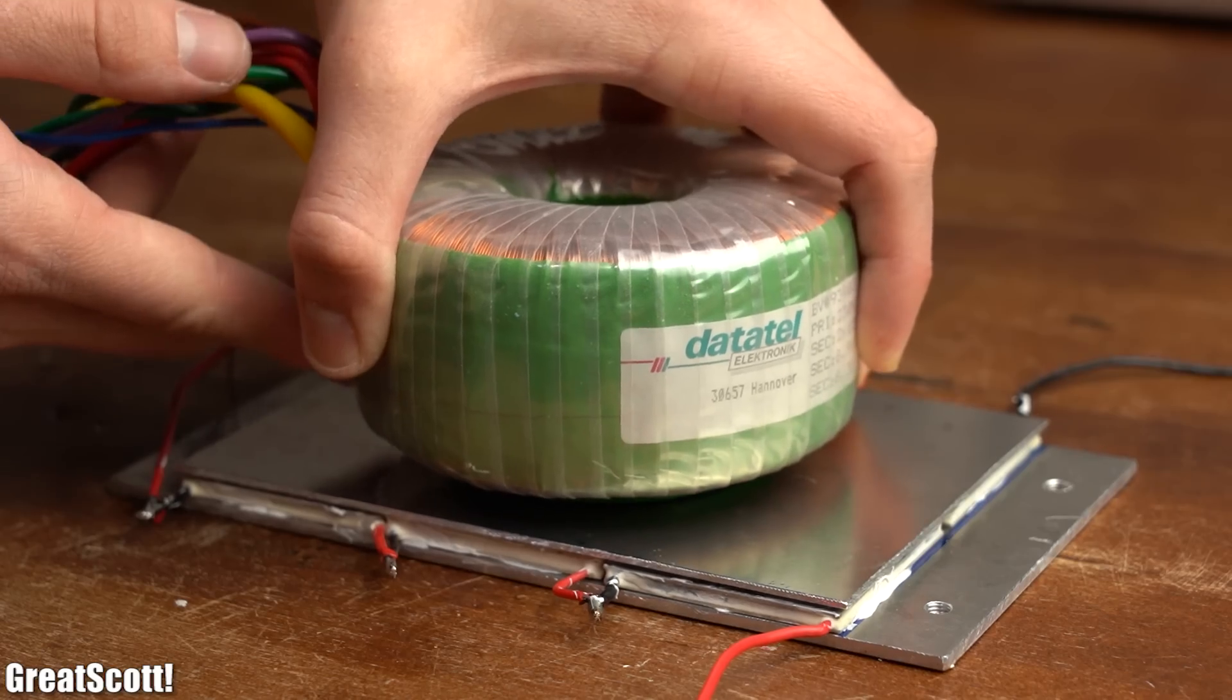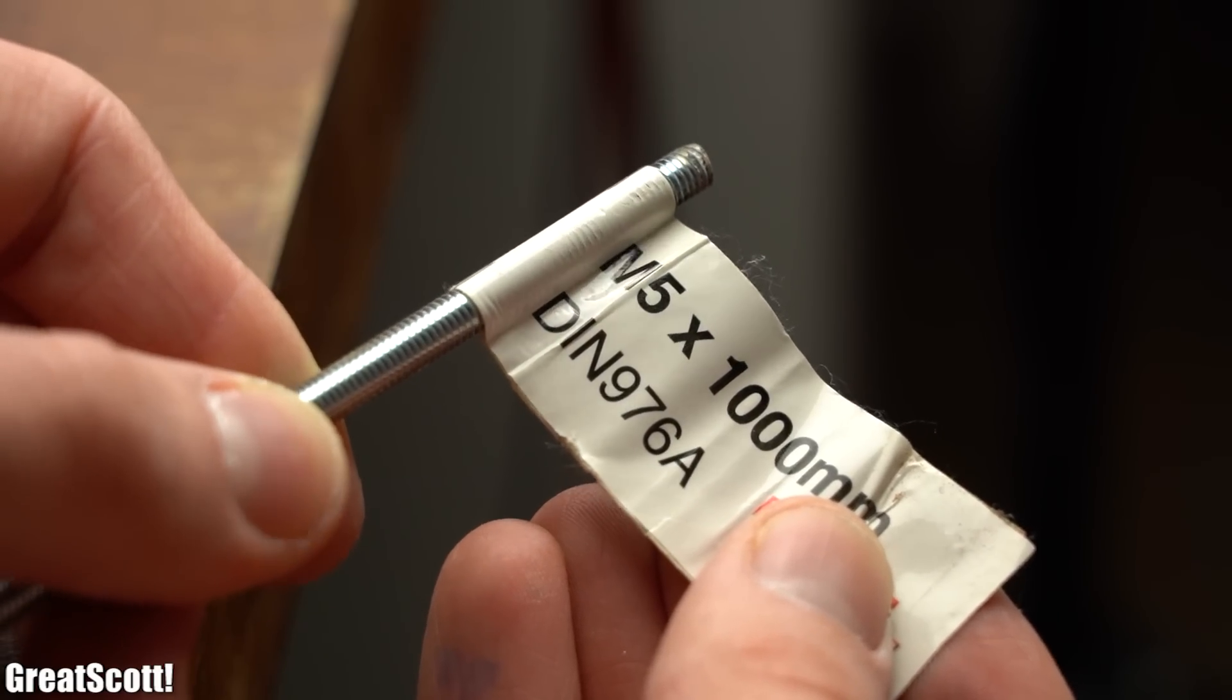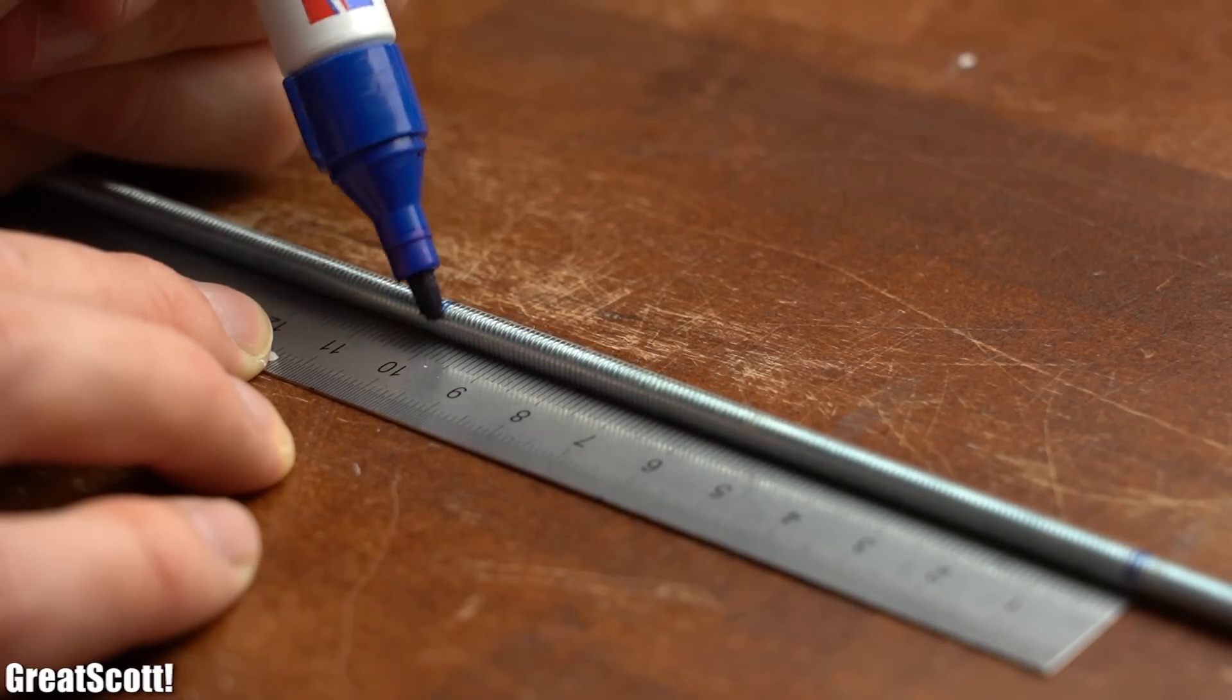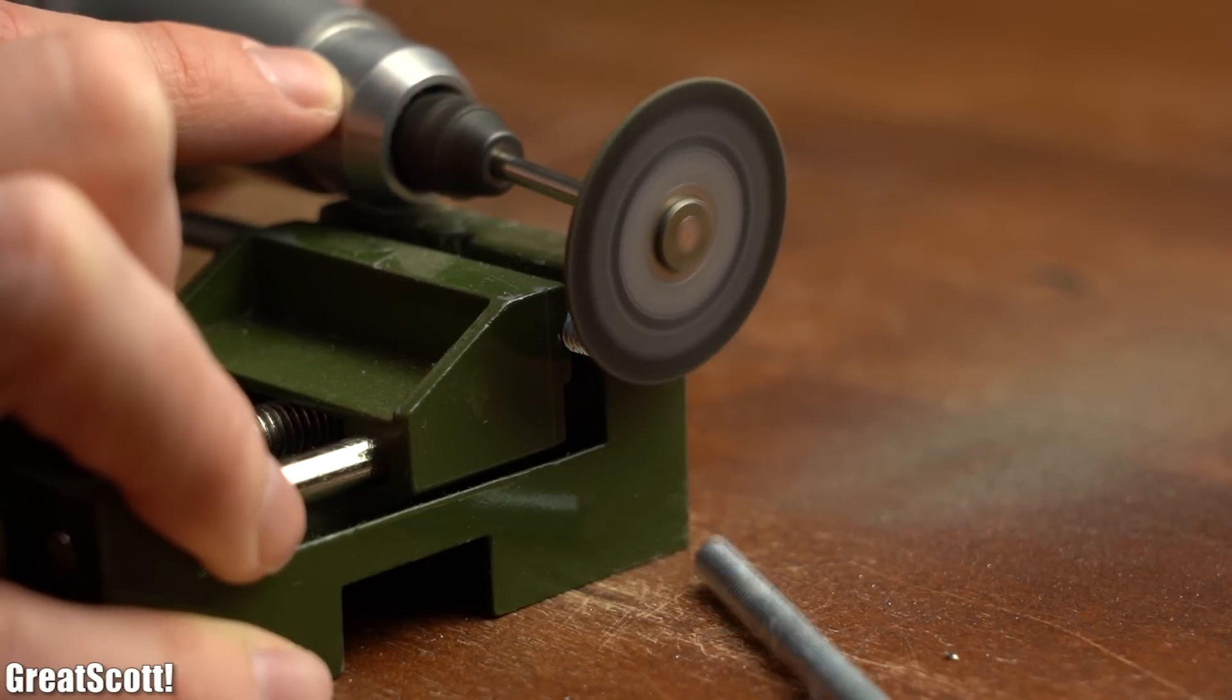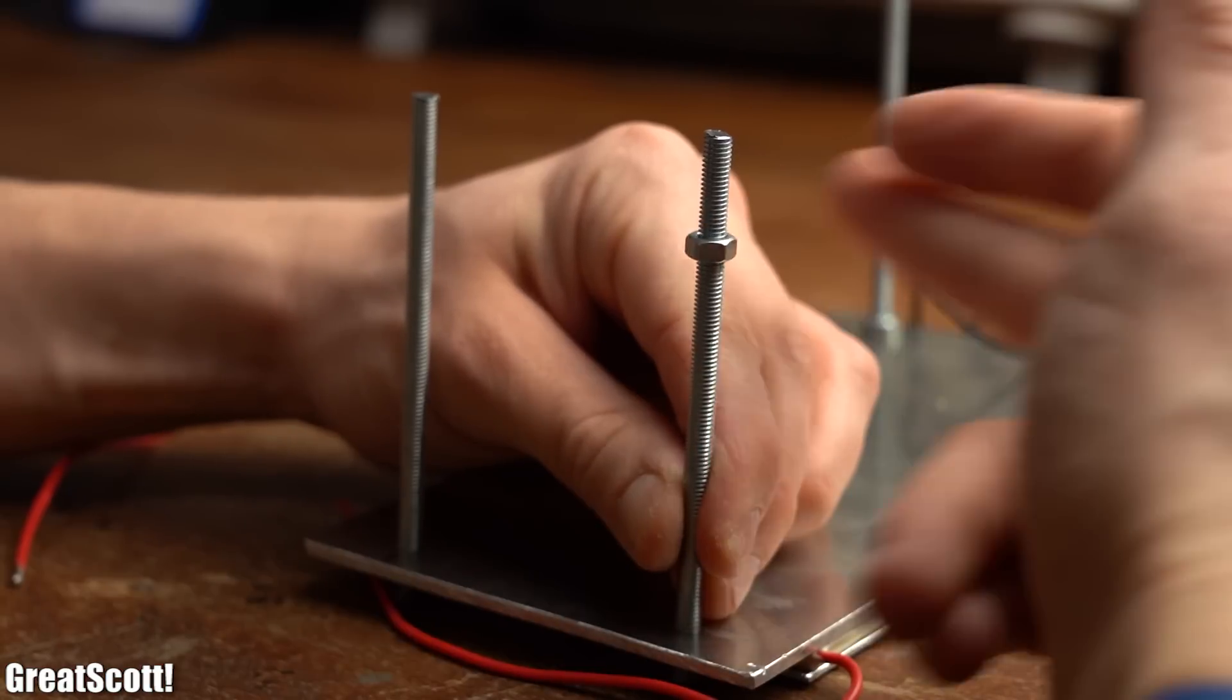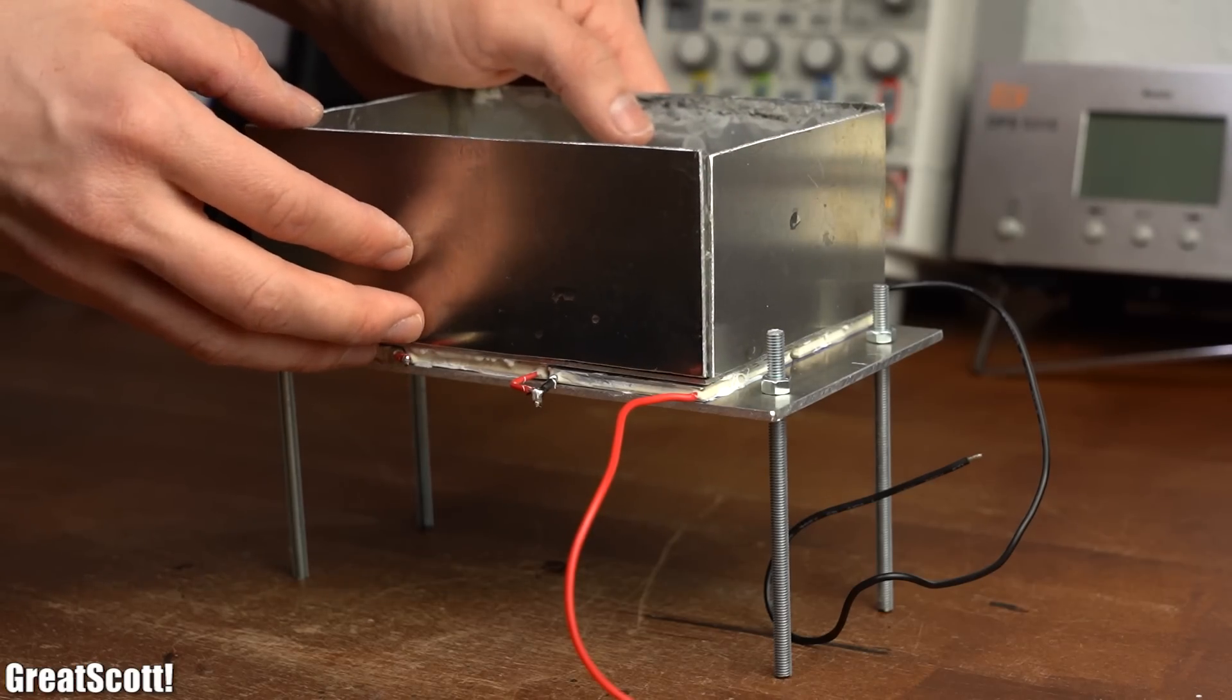And while the plaster was drying I got myself an M5 threaded rod onto which I created markings with a distance of 10 cm to one another, which I used to create the required 4 M5 bolts to suspend my generator in the air. So after adding them to the system in addition with some fitting nuts, my thermoelectric generator was basically complete.